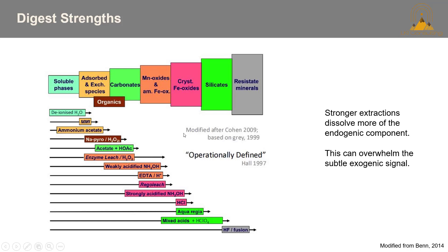On the other hand, if you're interested in what's been absorbed onto manganese or amorphous iron oxides, you could be looking at a weaker leach targeting those phases. Things like MMI and enzyme leach appear here, but it's really important to understand that these are proprietary to specific companies. Without knowing the exact reagents being used, you essentially have a black box technique and you're not exactly sure what's being dissolved beyond what the lab tells you.